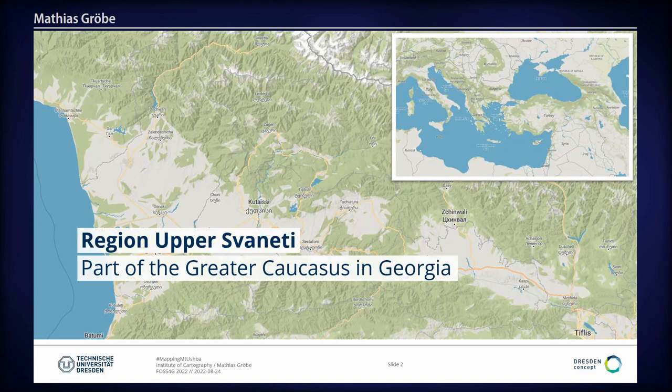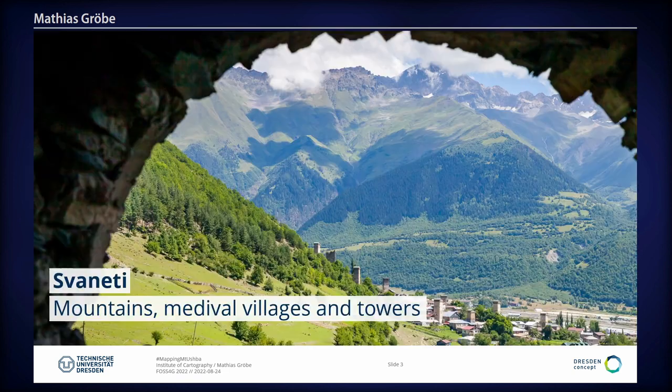So where are we? We are in Georgia — not in the US. We are in the country of Georgia, next to Russia, between the Black Sea and the Caspian Sea. And we are in a specific region called Svaneti, situated in the Greater Caucasus, in the middle of nowhere in the mountains.